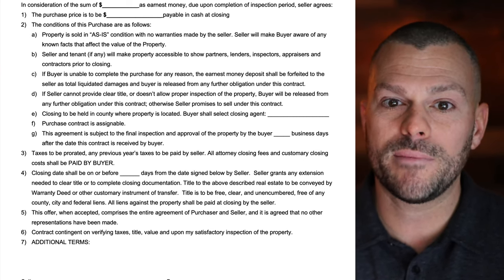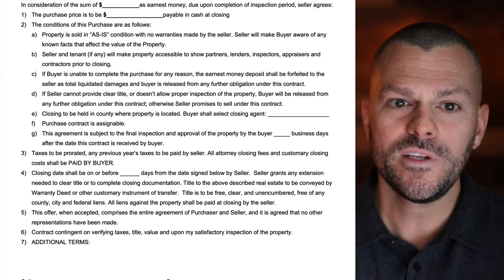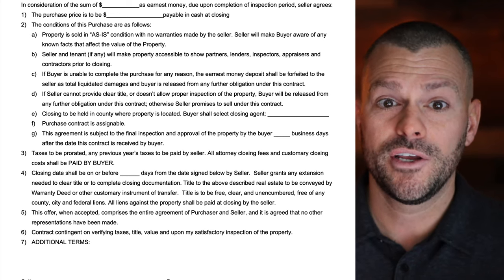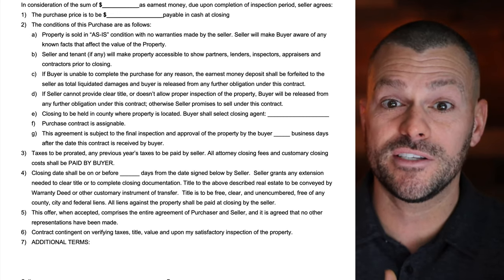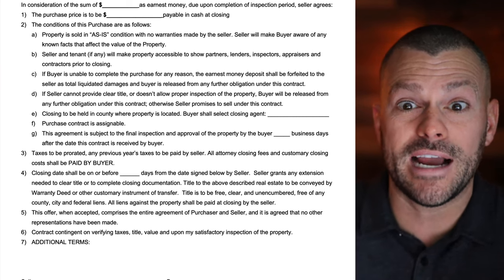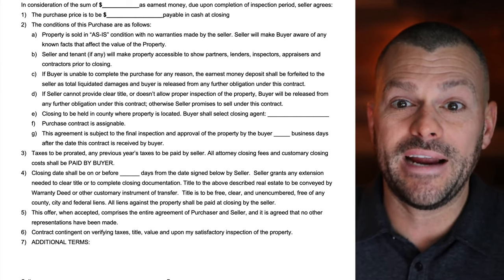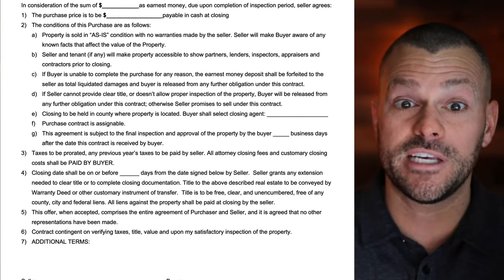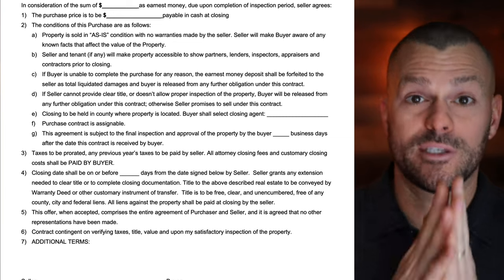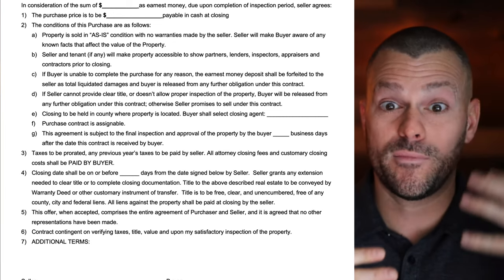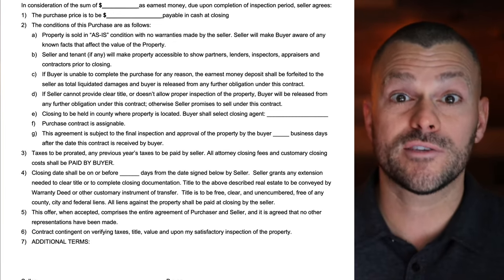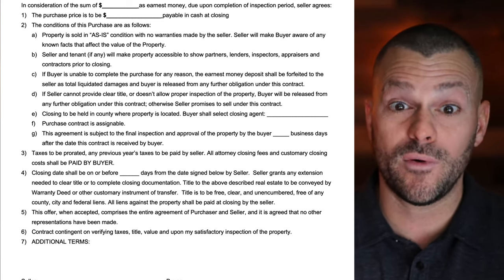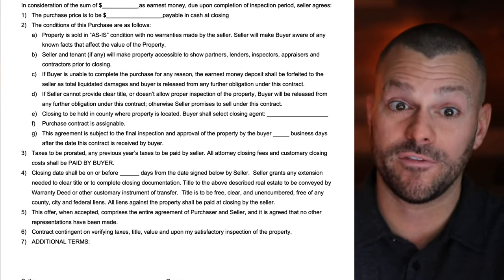That due consideration is the earnest money. Condition D: if the seller cannot provide clear title or doesn't allow proper inspection of the property, the buyer will be released from any further obligation under the contract. Otherwise, the seller promises to sell under this contract. Basically, if the seller can't provide clear title or doesn't allow inspections, we walk — we won't close. Otherwise, they are saying they want to sell, and as long as they can provide clear title and give us the proper inspection period, they promise to sell to us.